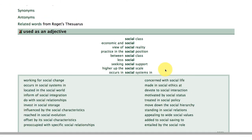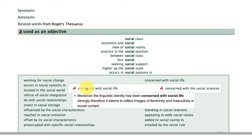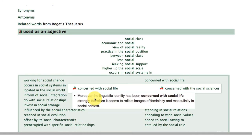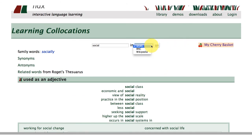This looks useful. 'Concerned with social life.' Moreover, the linguistic identity has been concerned with social life strongly. Therefore, it seems to reflect images of femininity and masculinity in social context. That could be useful, so I'm going to add that to the 'or social' category. Now I'm going to go up and take a look at another corpus.